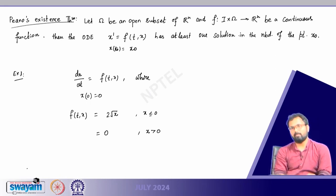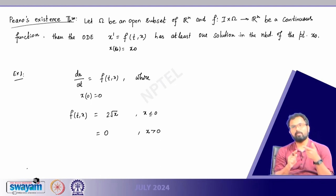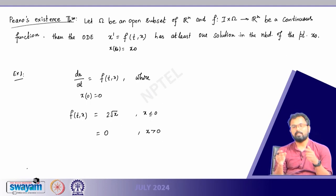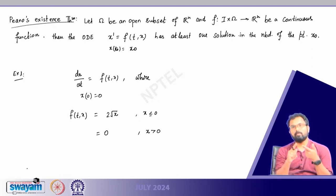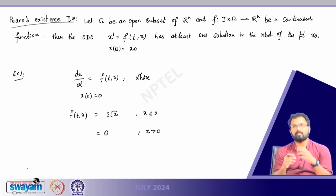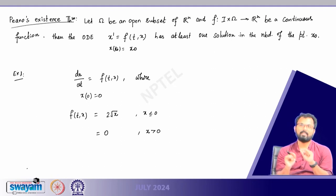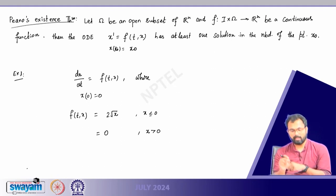The uniqueness part plays a very important role. We are talking about existence of solution — not global existence, meaning the solution exists on the entire real line, but local existence. The solution may or may not be unique. Several questions arise: whether the solution exists locally, whether it is unique, and if it exists, whether we can extend it globally. At least one question is settled: if the right hand side is continuous, a solution exists.